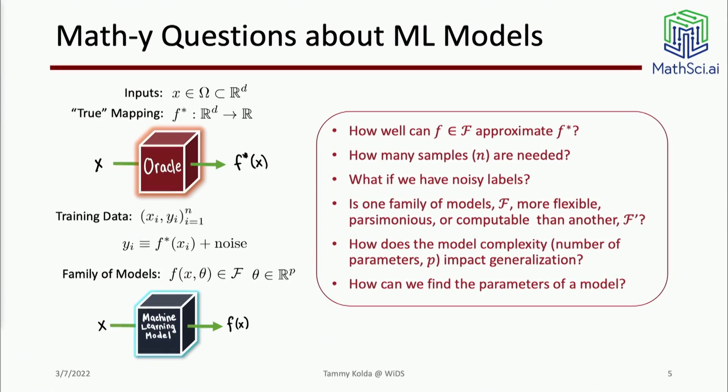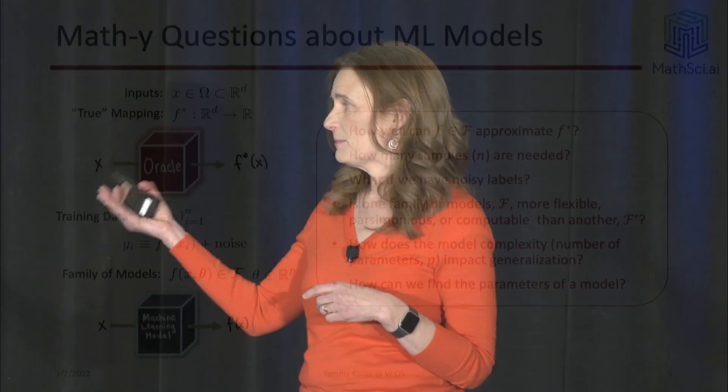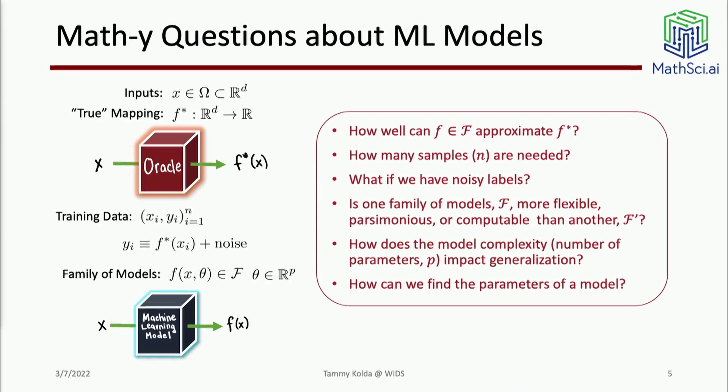We are trying to learn a model that's inside a larger family of models. We can ask questions: how well can a function in a given family learn an arbitrary function? How many samples do we need to build a good model? What if we have noise in our labels? Are there certain families of models that have advantages in my context? Is one more flexible? Is another more parsimonious? Are some more computable than another?